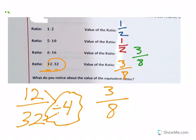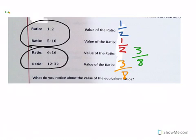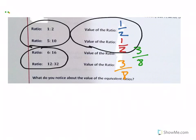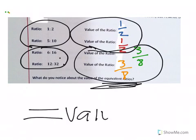So what do you notice about the value of the equivalent ratios? Well, let's take a look. 1 to 2 and 5 to 10 are both equivalent ratios. 6 to 16 and 12 to 32 are both equivalent ratios. Well, they all have the same value as the other equivalent ratios. So 1 to 2 and 5 to 10, the value of both of them are one half. The value of 6 to 16 and 12 to 32, both of those values are 3 eighths. So when 2 ratios are equivalent, then they also have an equal value, which is that fraction in simplest form.